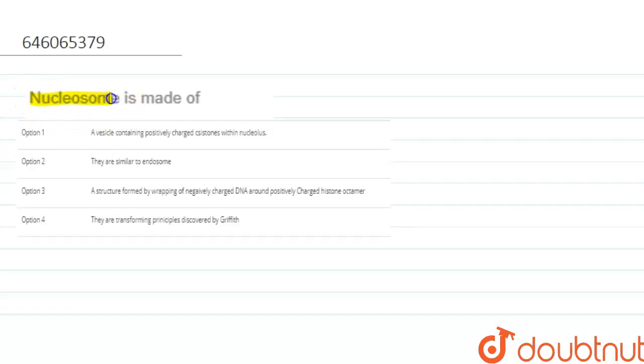We are given that nucleosome is made of. So option one says a vesicle containing positively charged cistrones within nucleolus. So first of all we should be knowing what is a cistrone, right?